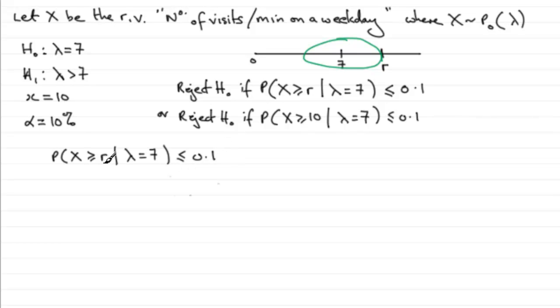Now working out the probability that X is greater than or equal to a particular value is exactly the same as doing 1 minus the probability that X is less than or equal to R minus 1, given that H0 is true, given that lambda equals 7, that's going to be less than or equal to 10% or 0.1.